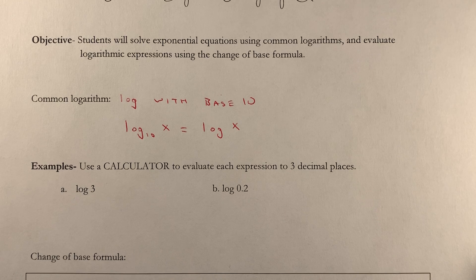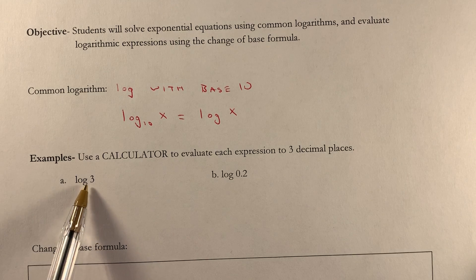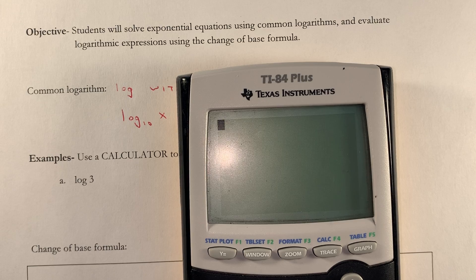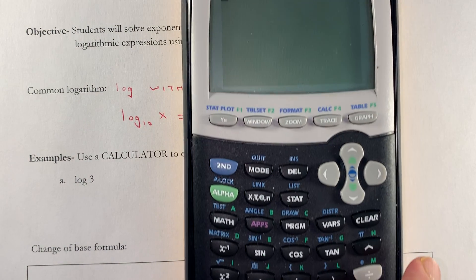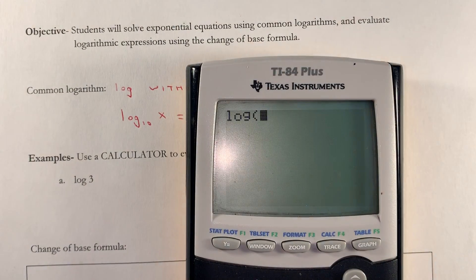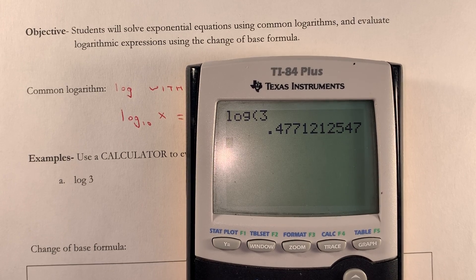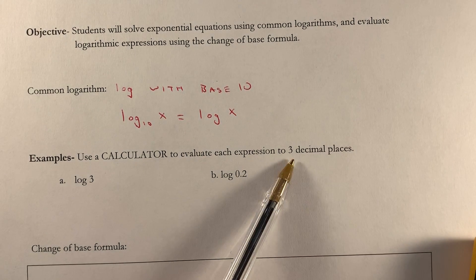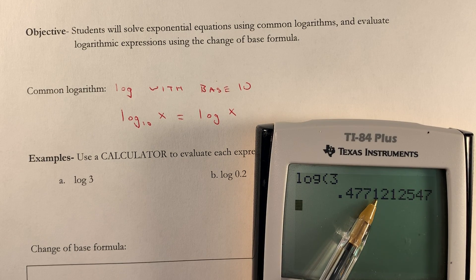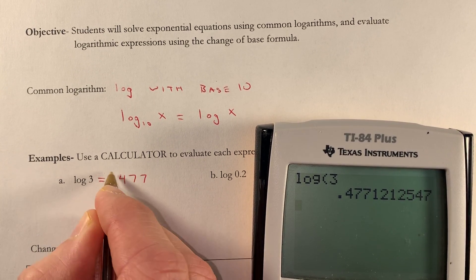We're going to use a calculator to evaluate a couple logarithms. We've got log 3, so that's a common log, which means log base 10. The calculator will do that easily just by pressing this log button right here. Log, and then we'll type in a 3. Log 3 equals .4771. It says 3 decimal places, so we'll keep those: .477. That next number is not big enough to bump that 7 up, so it's .477.